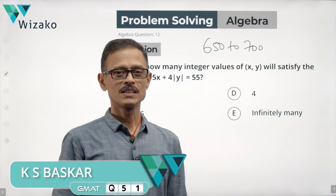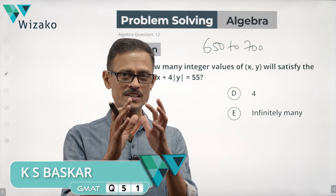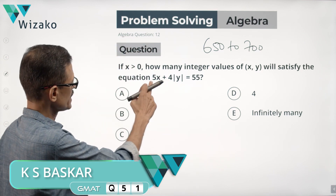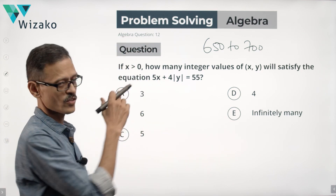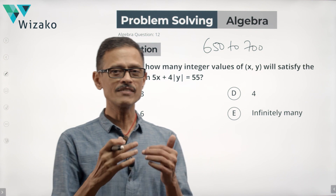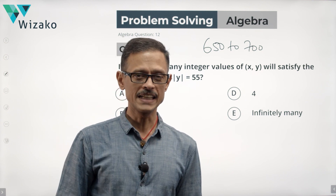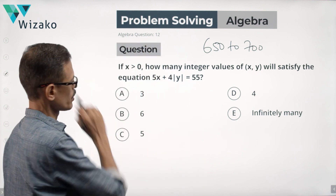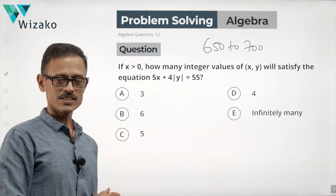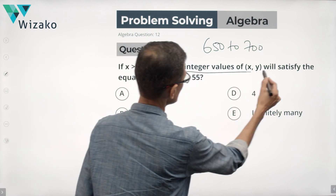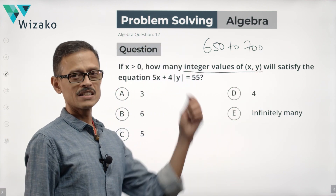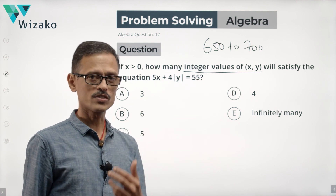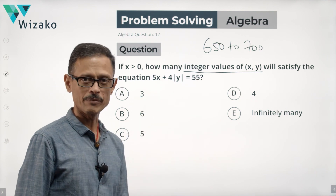It's from linear algebra. The concept tested is linear algebra, but it's a more difficult question primarily because of this equation: 5x plus 4 modulus of y. So we're dealing with absolute values on top of linear equations. The question is: if x is positive, how many integer values of x and y will satisfy the equation 5x plus 4 modulus of y is equal to 55?